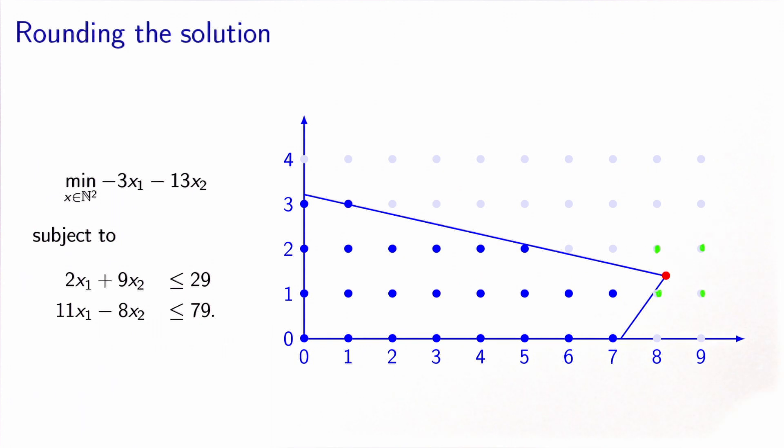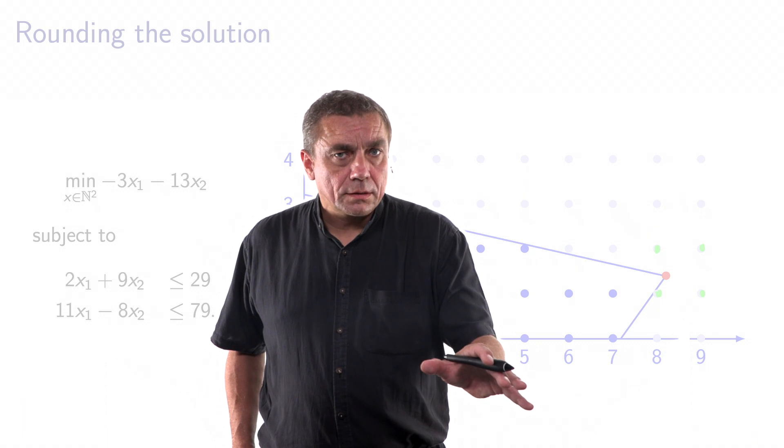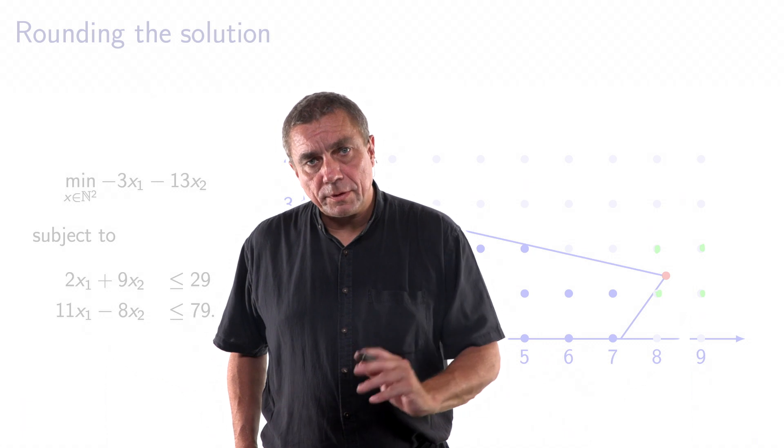Moreover, we know because we have performed the full enumeration of this problem, we know that the optimal solution is here actually. This is the optimal solution of the integer linear problem. And as you can see, even if I was able to round down or up this solution, I would be very far away from the optimal solution of the integer problem. It shows that this idea of rounding the solution of the relaxation problem does not work. We need to find something better.